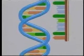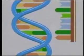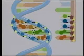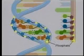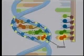Both DNA and RNA are long chains of nucleotides. Each nucleotide contains a sugar, a phosphate group, and one of four bases.